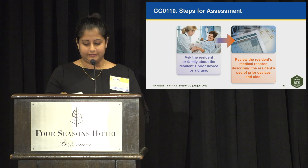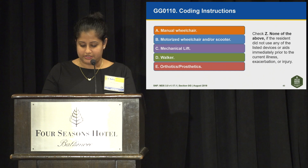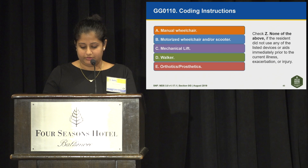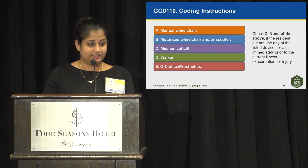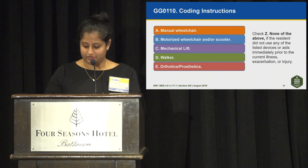The coding instructions for GG0110 ask you to check all devices that applied. There is an option to check Z — none of the above — if the resident did not use any of the listed devices A through E. That is when you would check Z, none of the above.